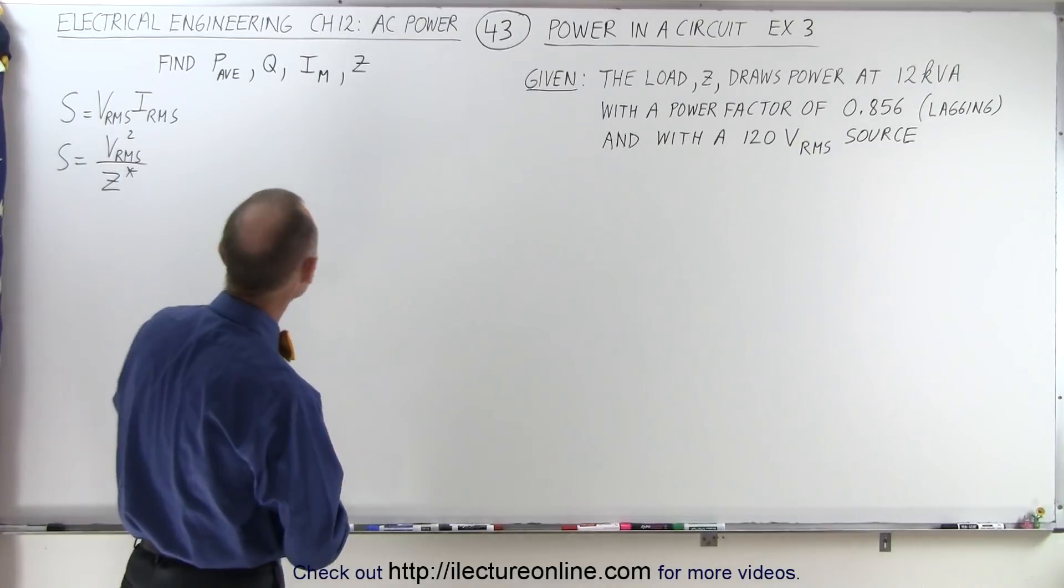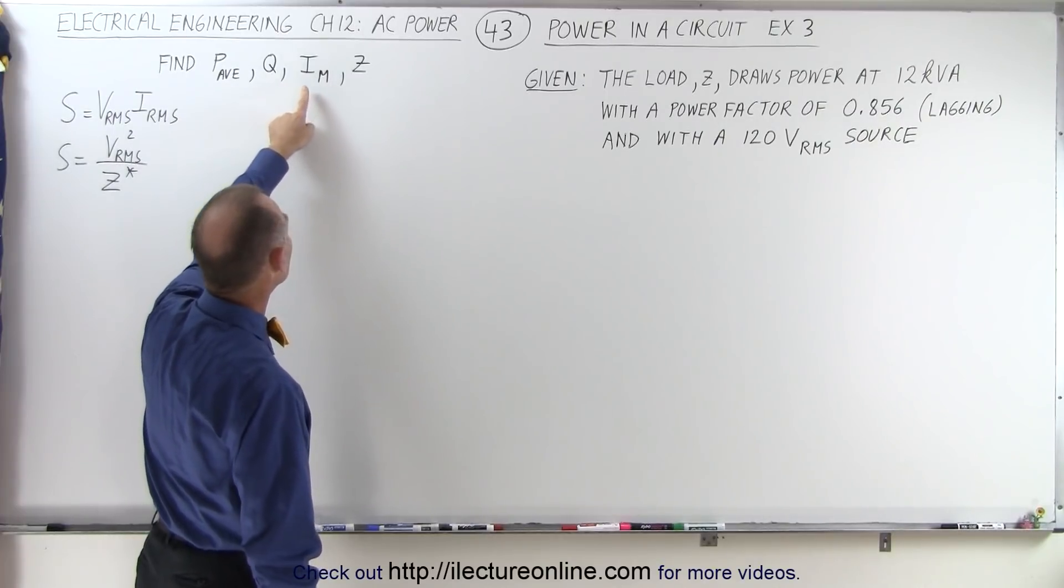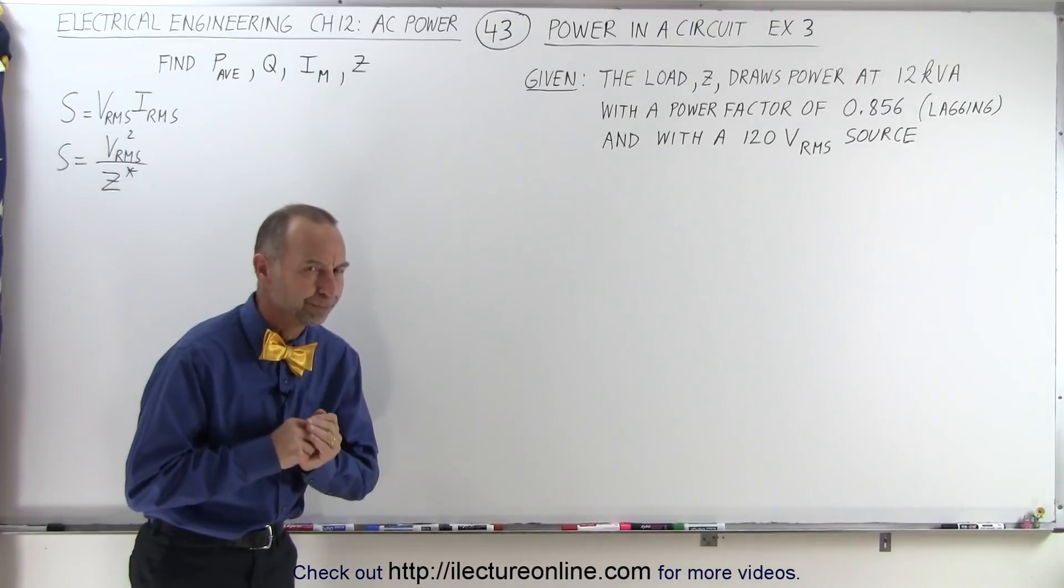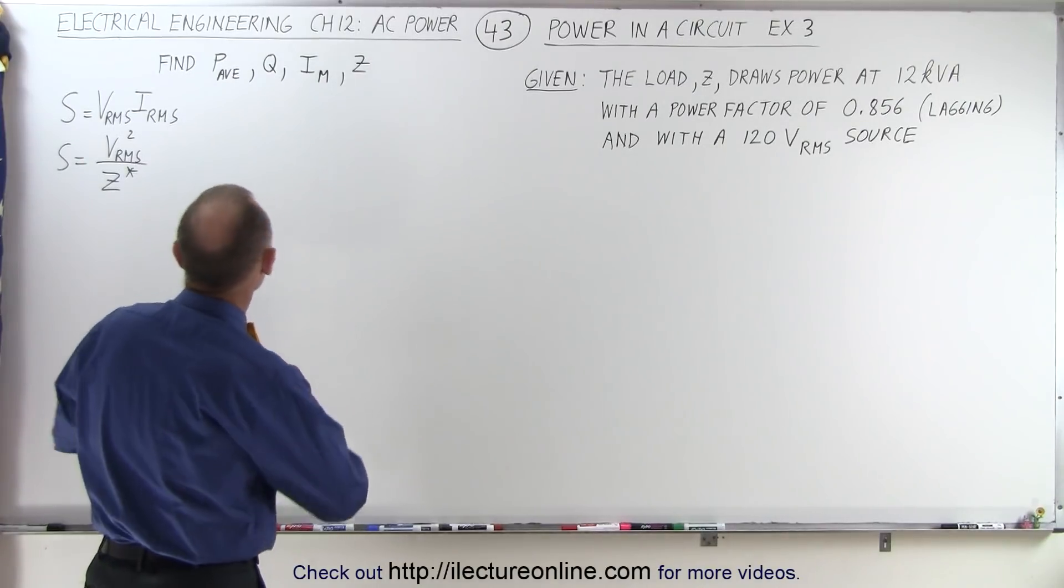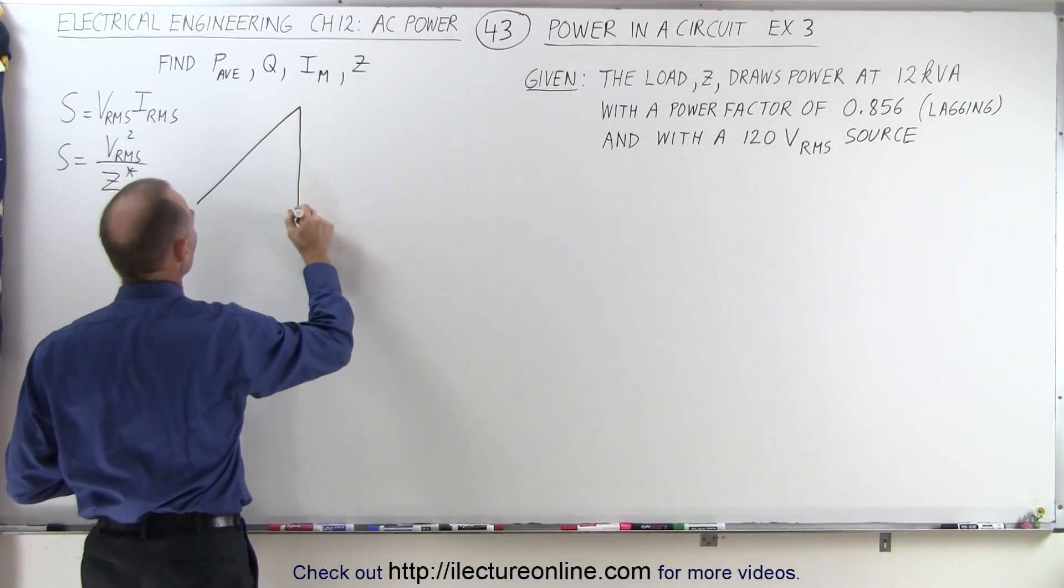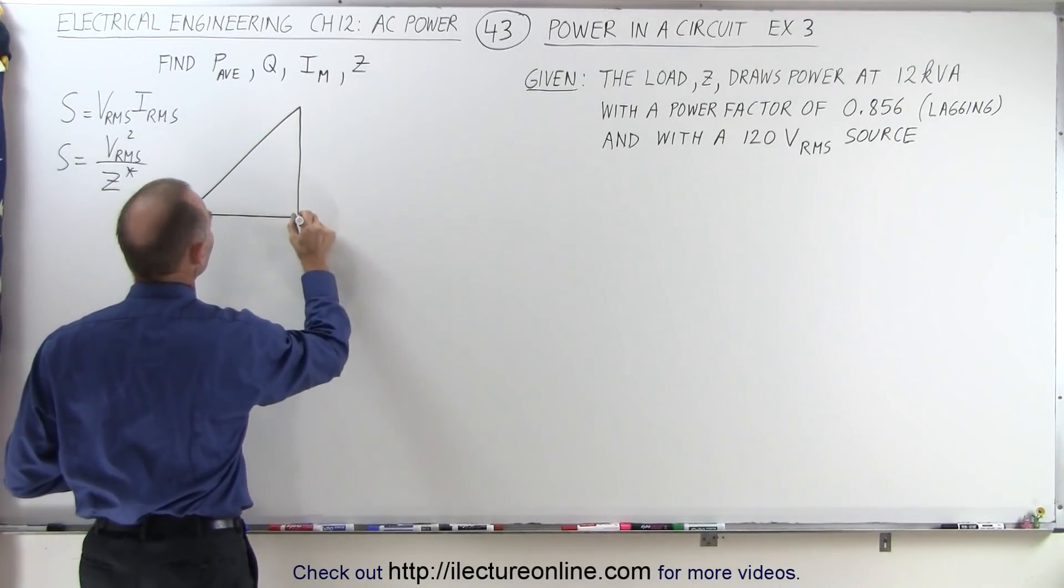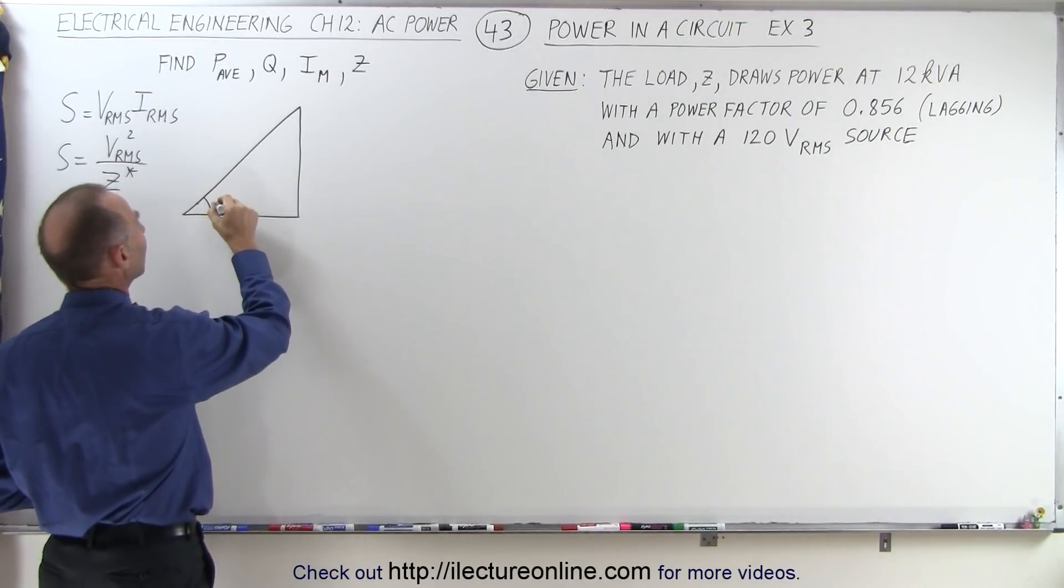Let's see what we can do with that, given that we're trying to find the average power, the reactive power, the maximum current, and the impedance in the circuit. So we can probably start with the following. Let's say that we have a triangle, and since we have a positive phase angle because we have a lagging power factor,